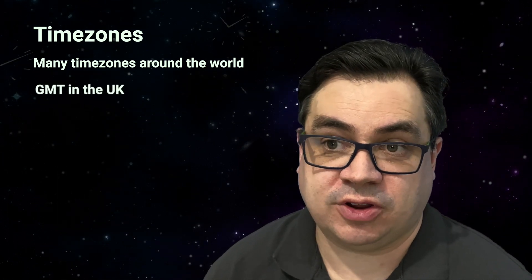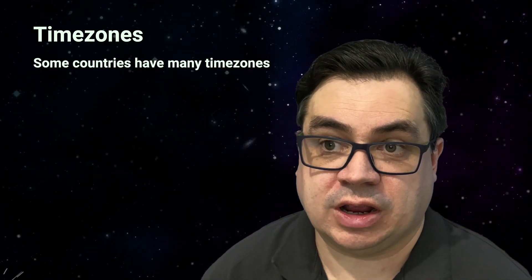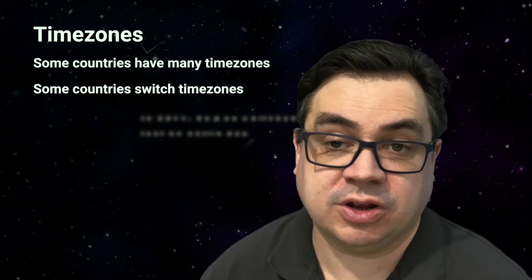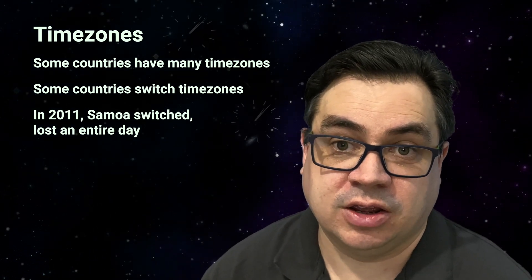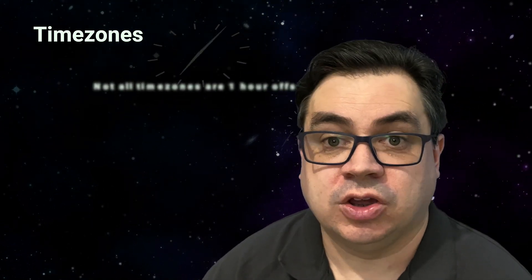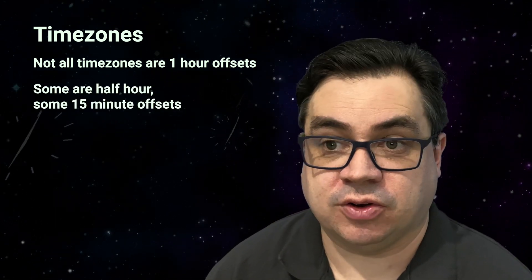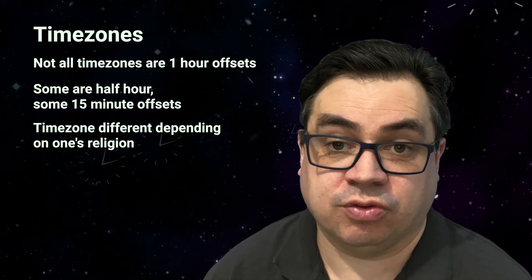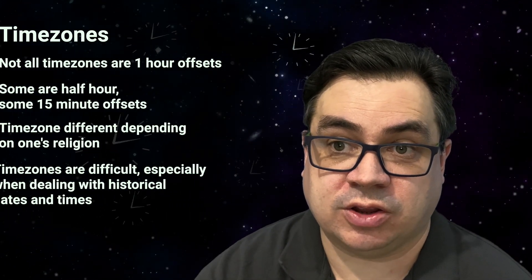First, let's talk about time zones. As most of you are aware, there are many time zones around the world. I live in the UK, so we have GMT, which stands for Greenwich Mean Time, named after the Royal Observatory in Greenwich, London. Some countries have many time zones and some have even switched time zones. For example, in 2011 Samoa switched which side of the international date line it was on and lost an entire day — they went from Thursday to Saturday, completely skipping Friday. Not all time zones are one-hour offsets either; there are some that are half-hour and some that are 15-minute offsets. There have even been times where the time zone differs depending on your religion, making keeping track of time zones really hard, especially when dealing with historical dates and times.